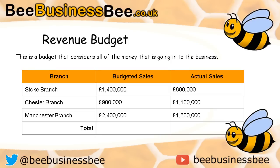We're going to look at a revenue budget. The revenue budget shows all the money coming into the business. As you can see, I've got my three branches: Stoke, Chester, and Manchester. I've got my budgeted sales — what I want them to bring in — and my actual sales revenue. Remember: the expenditure budget shows money going out, and the revenue budget shows money coming in. You may want to pause the video on the next slide as it has the activity explained in more detail.